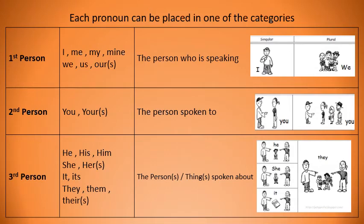Each pronoun can be placed in one of the categories. In the first person we have: I, me, my, mine, we, us, ours. This is the person who is speaking. In the second person we have: you, your, yours. That would be the person spoken to. And then we have the third person: he, his, him, she, her, hers, it, its, they, them, their, and theirs. This refers to the person or things spoken about.